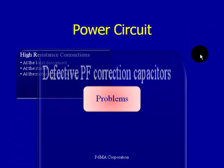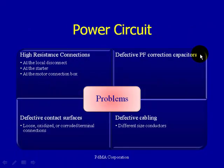What are some of the problems in the power circuit? High resistance connections are one — at the local disconnect, at the starter, or at the motor connection box. A high resistance connection on one of those phases can result in an inefficient running motor. Other issues include defective power factor correction capacitors, defective contact surfaces, oxidation, loose connections — all of which contribute to high resistive imbalances — as well as defective cabling and different size conductors.